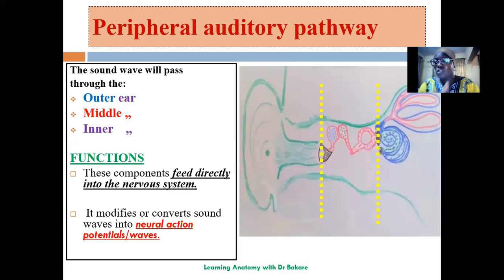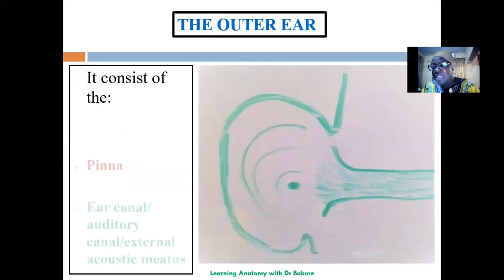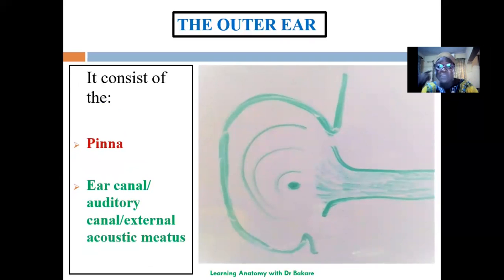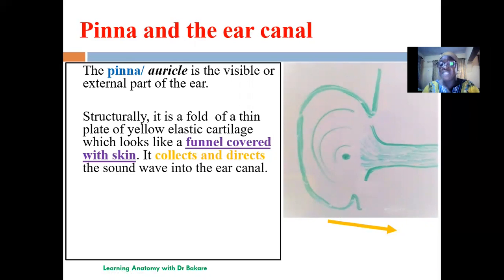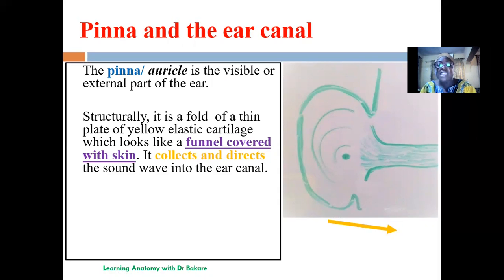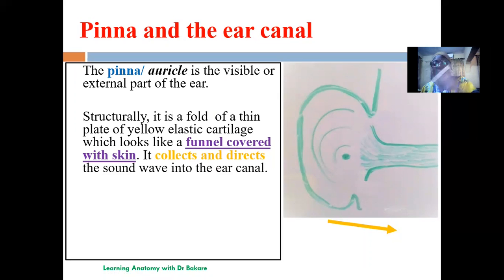The first region is the outer ear. The outer ear is made up of the pinna and the auditory canal, also called the external acoustic meatus — we actually have an internal acoustic meatus after the inner ear. The pinna is the visible part of the ear on the outside, and it is made up of elastic cartilage. This elastic cartilage runs in a spiral, expanded pattern — like a funnel-shaped structure — allowing it to accommodate as much sound wave as possible.